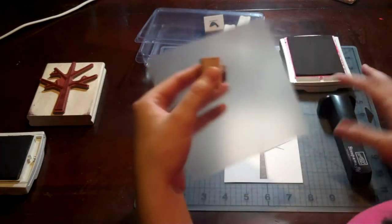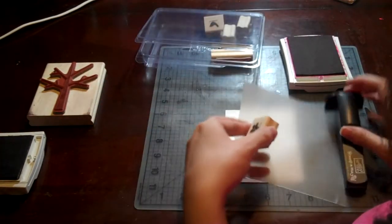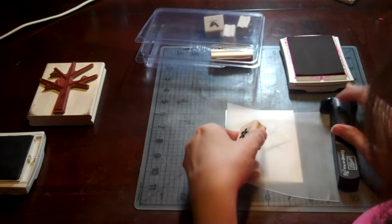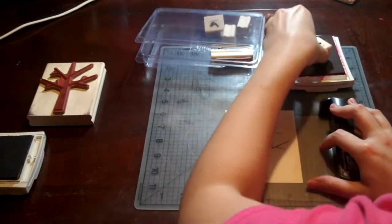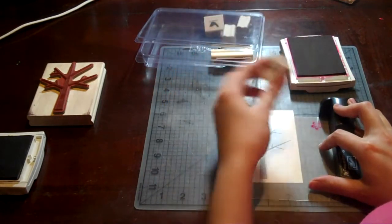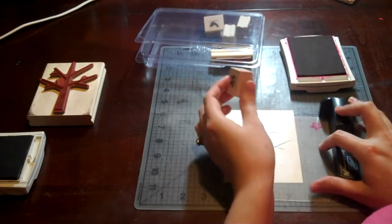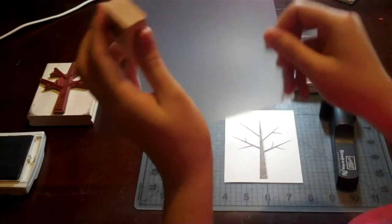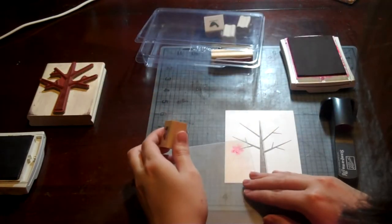Then I'm going to repeat the same process to get the image on this plastic sheet. Stick the plastic sheet in the corner, ink up my stamp, go straight down in the corner. Now my little flower is on my plastic sheet. So now I can put it where I want it.